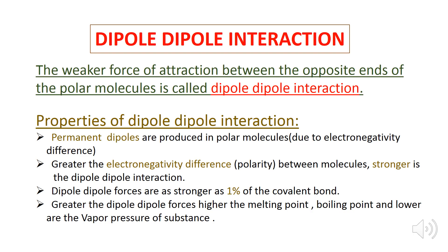By definition, the dipole-dipole interaction is the weaker force of attraction between the opposite ends of the polar molecules. Permanent dipoles are produced in polar molecules due to the electronegativity difference. Greater the electronegativity difference between the molecules, stronger is the dipole-dipole interaction. Dipole-dipole forces are as strong as 1% of the covalent bond. Greater the dipole-dipole forces, higher the melting point, boiling point, and lower the vapor pressure of a substance.